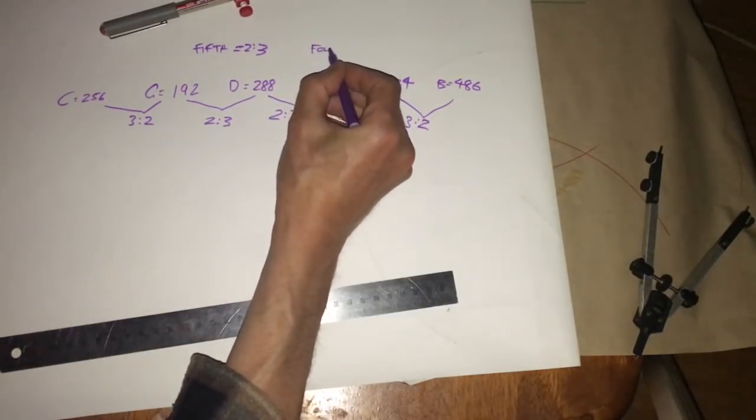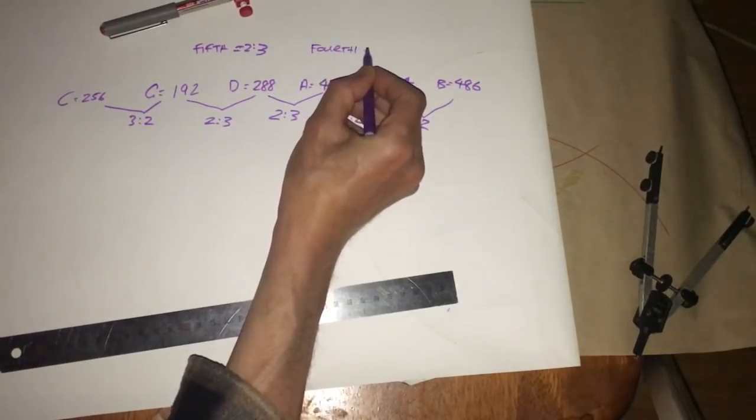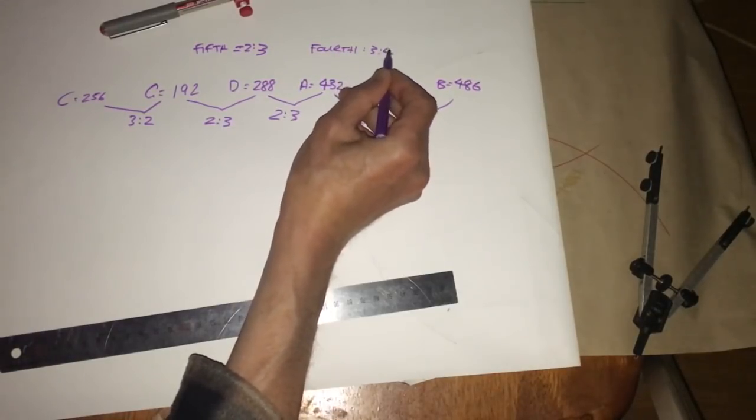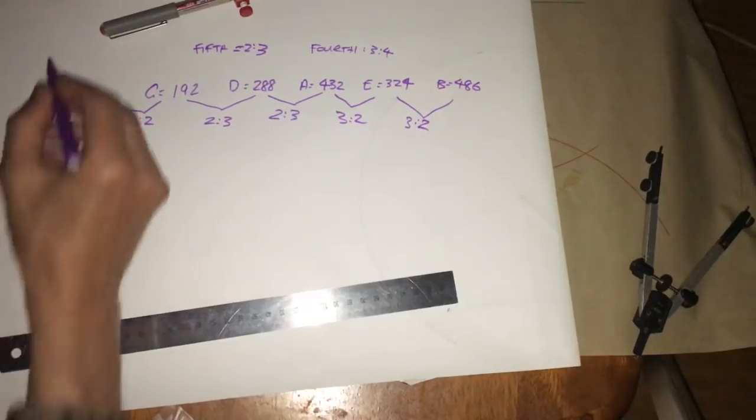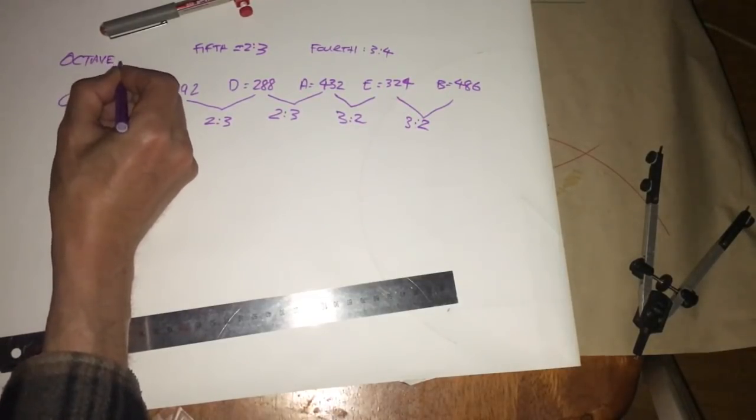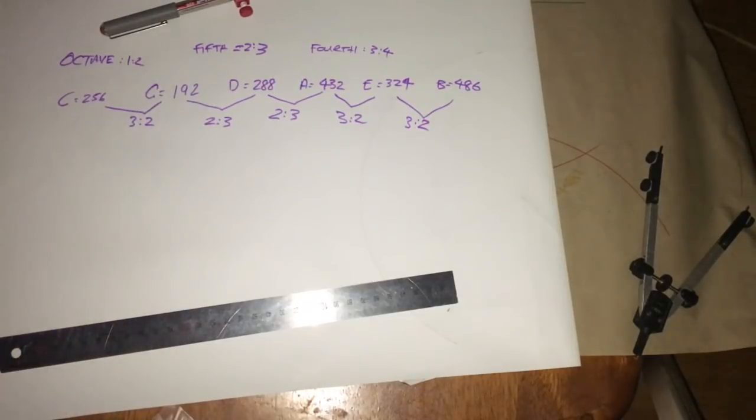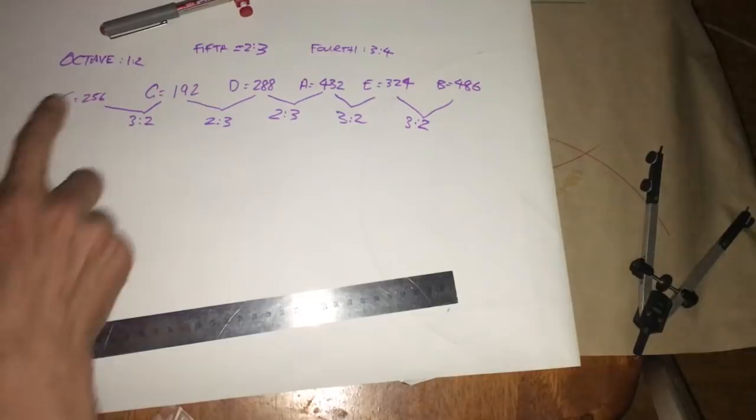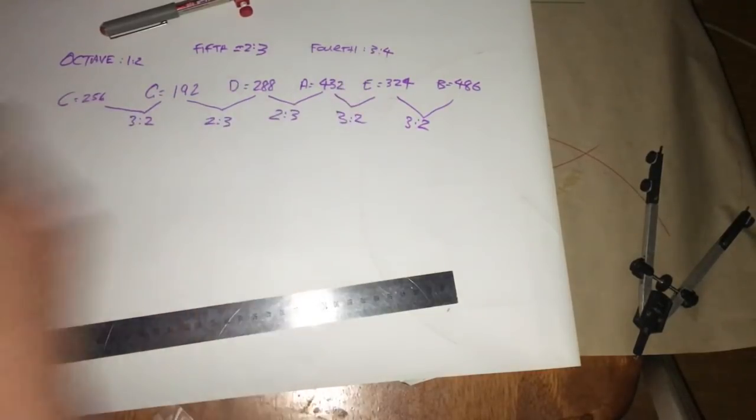Then we also have the perfect fourth, which is a 3 to 4 scale. And also you have an octave, which is a 2 to 1 or a 1 to 2. So if you get a piece of string, like a guitar string, you pluck it, then if you put your finger halfway along, so you halve the string, you get a difference of the octave there.